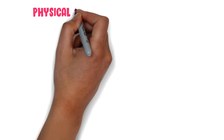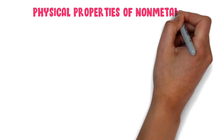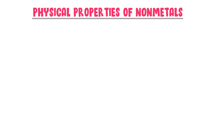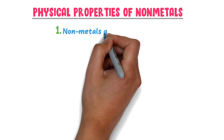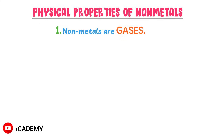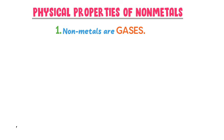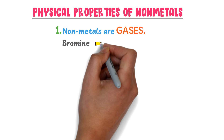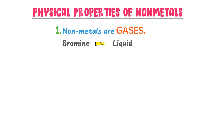What are the physical properties of non-metals? Well, non-metals are often gases at room temperature, but there are some exceptions. For example, bromine is a non-metal and liquid at room temperature.